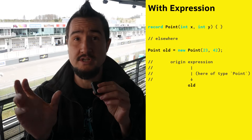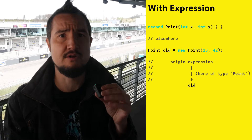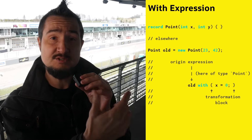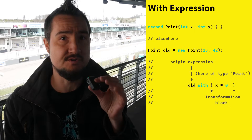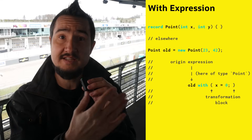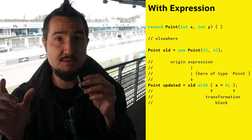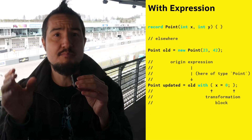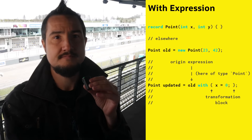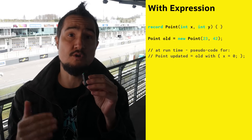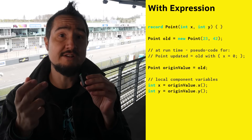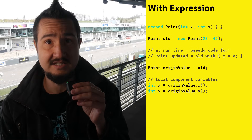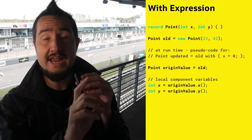JEP 468 proposes to derive new record instances from existing ones with a new with expression. A with expression starts with a so-called origin expression, which must be of a record type — in most cases just a reference to a record variable. It's followed by the situational keyword 'with' and ends with a transformation block: a pair of curly braces that can contain almost arbitrary code. The type of the whole expression is that of the origin expression, so you can assign it to a variable of the same type as the initial record variable. For a record point int x int y, that could be: point updated = old with { x = 0; }. At runtime, Java will evaluate the origin expression to the origin value, then take that record and create a variable for each component with the same type, name, and value as given by the accessor, making these local component variables available in the transformation block.